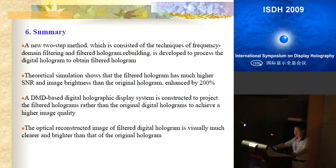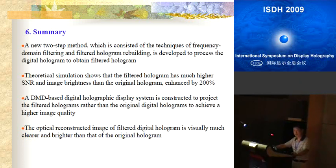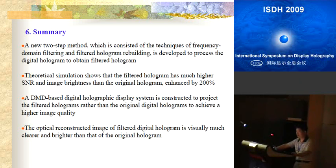In conclusion, we propose a new two-step method to process the original digital hologram to obtain a filtered hologram. Theoretical simulation shows that the filtered hologram has much higher signal-to-noise ratio and image brightness than the original hologram, with an enhancement factor of about 200 percent. A DMD-based digital holographic display system was constructed to project the filtered hologram rather than the original digital hologram, achieving higher image quality. The optical reconstructed image of the filtered digital hologram is visually much clearer and brighter than that of the original hologram.